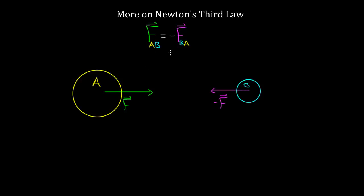So these Newton's third law pairs — oftentimes called force pairs or Newton's third law partner forces — are always on different objects. The convention I'm using is that the first letter represents the object the force is on. So this A means this green force F is on A and exerted by B. And this shows it's exerted on B and exerted by object A. This pink force is exerted on B, this green force is exerted on A, they're equal and opposite, and they do not cancel because they're not on the same object.